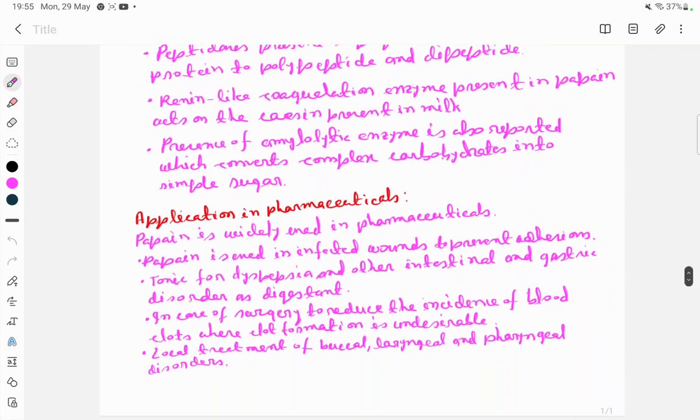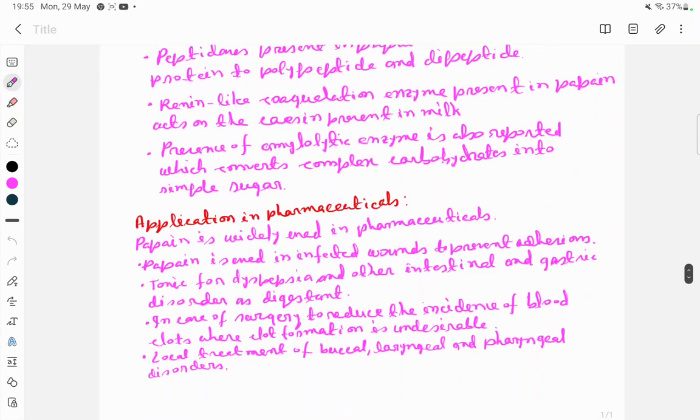Applications in pharmaceuticals: Papain is widely used in pharmaceuticals. It is used in infected wounds to prevent adhesions, as a tonic for dyspepsia and other intestinal and gastric disorders, as a digestant, and in surgery to reduce the incidence of blood clots where clot formation is undesirable.